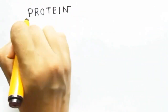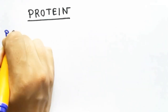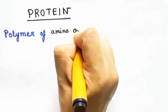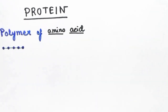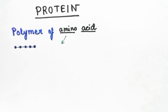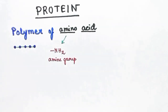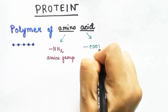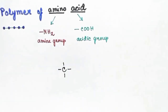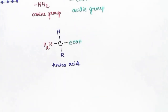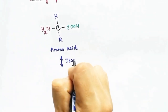In this video we are going to talk about the structure of protein. Protein is a polymer of amino acids — polymer means it has same type of repeating units, and that repeating unit is amino acid. This is why protein is also called the chain of amino acids. Amino acid means there is one amine group (NH2) and one acidic group (COOH), along with one hydrogen and one alkyl group (R group).